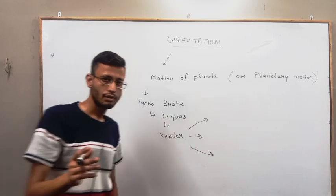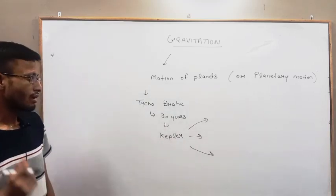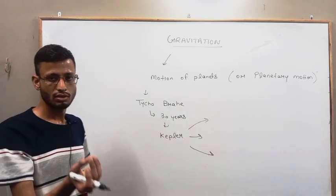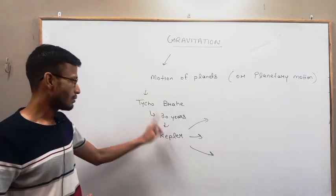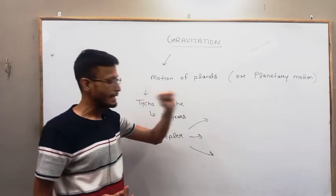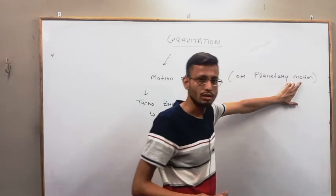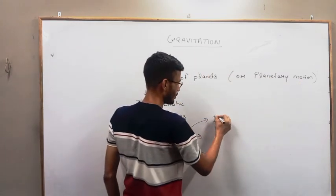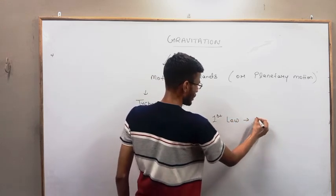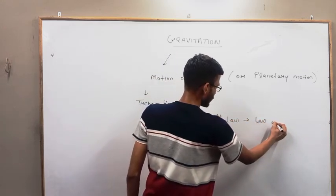So just like in laws of motion we study about object motion with first law, second law and third law, similarly Kepler's laws deal with planetary motion. Here also, first law is known as law of orbits.